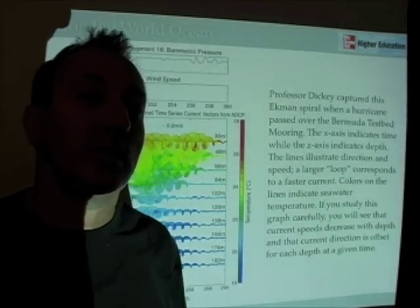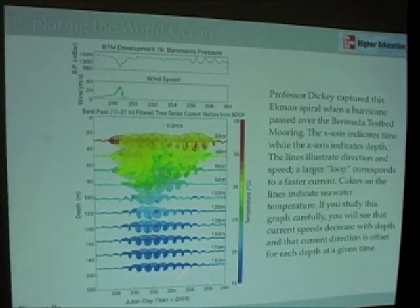And again, it wasn't until 2003 that we actually had the technology to measure an Ekman spiral in the ocean. So props to Tommy Dickey. That's why he's become such a famous oceanographer for doing this type of work. Our hat's off to him.